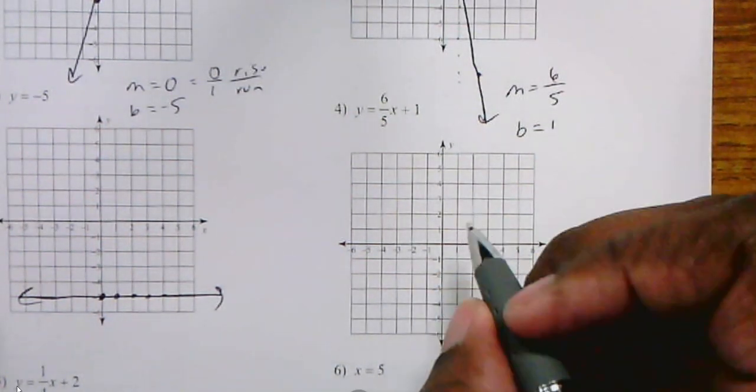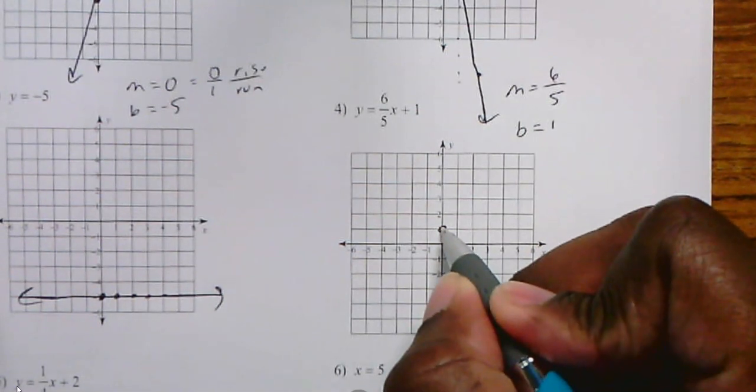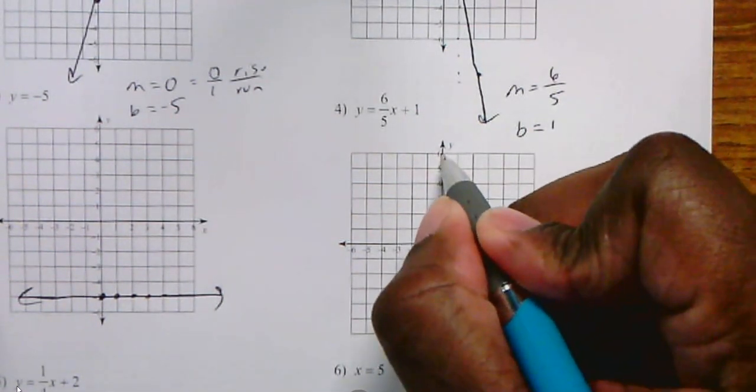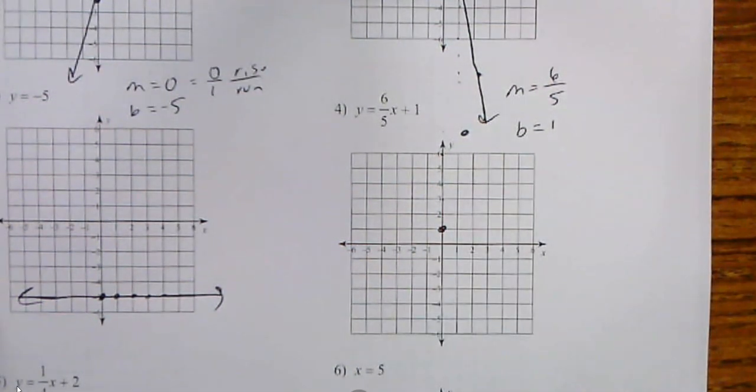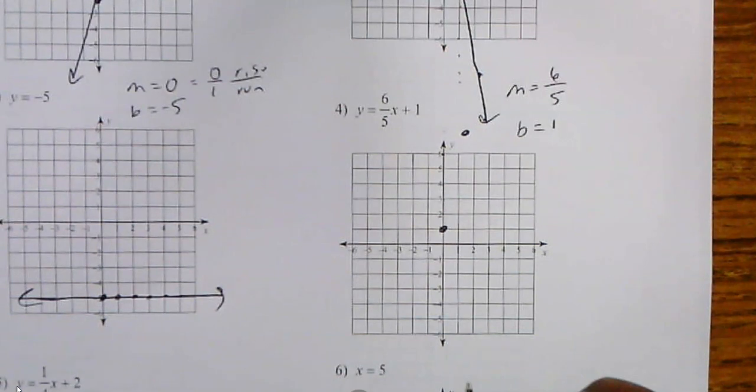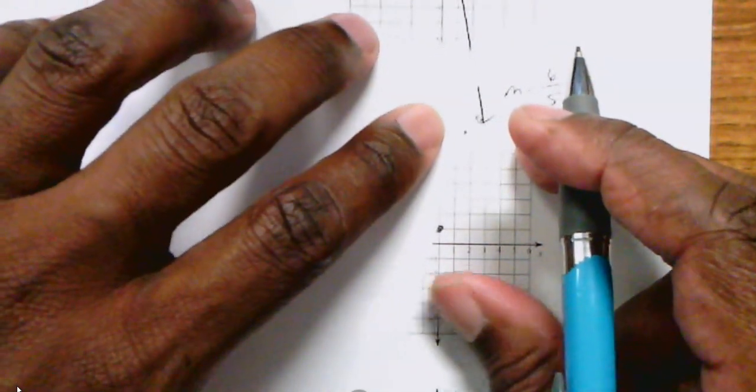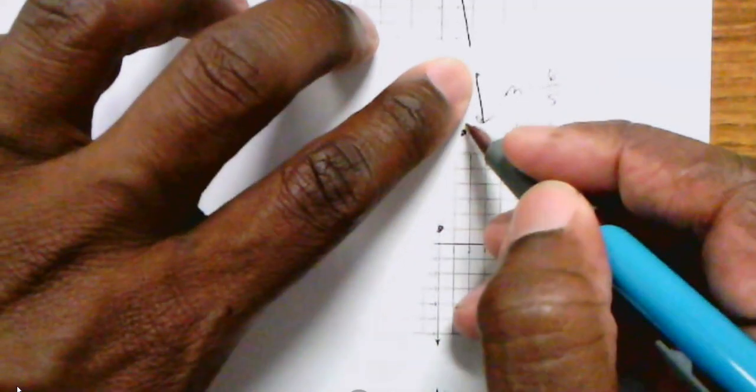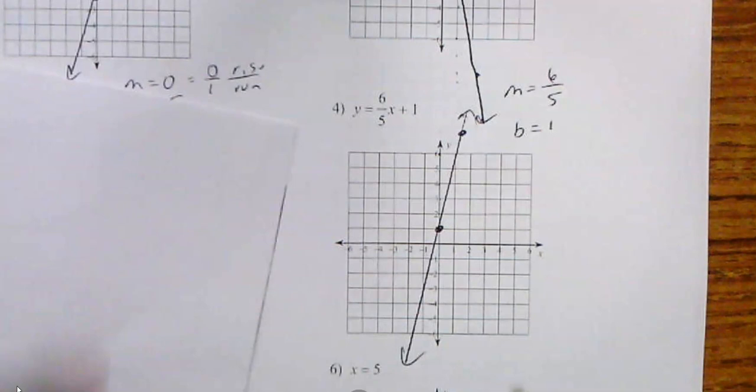I'm going to go over to where it's 1 on the y-axis. I'm going to rise 6: 1, 2, 3, 4, 5, 6 and run 1. You see it actually went off the graph a bit. Those two points are enough, and I can connect the dots. This would be the line.